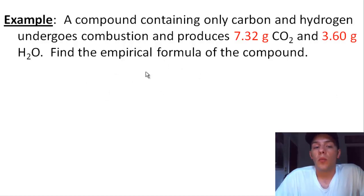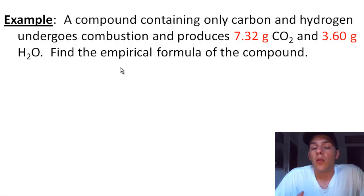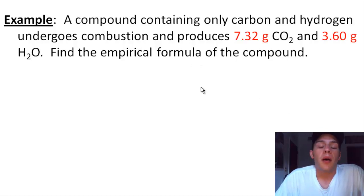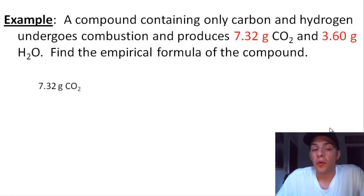When we say empirical formula, we want to know the formula that contains the relative numbers of atoms of each element in the compound — or equivalently, the relative numbers of moles of atoms of each element. What we need to do is start by taking these masses and converting them into moles. Starting with CO2: we have 7.32 grams of CO2.